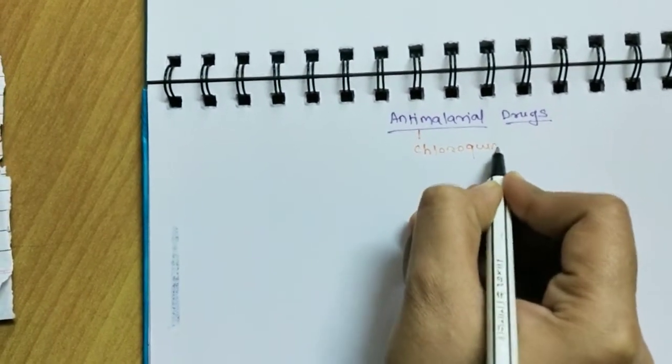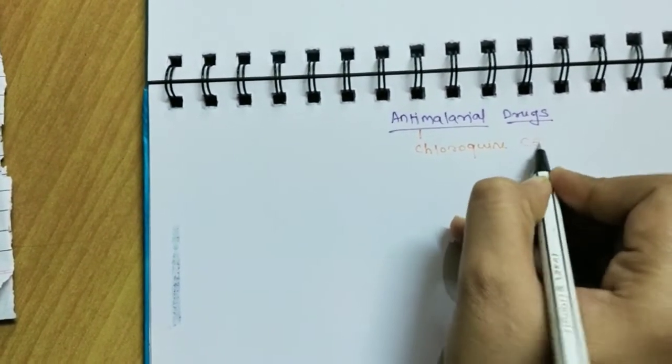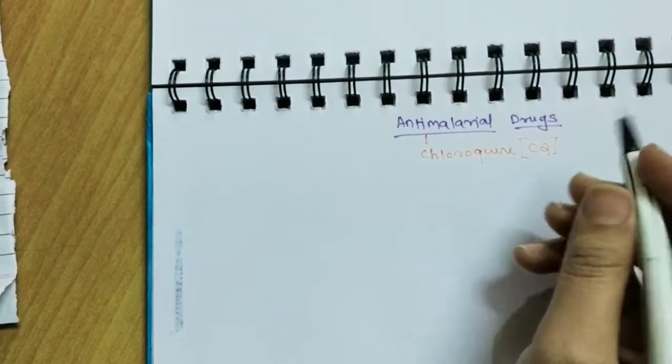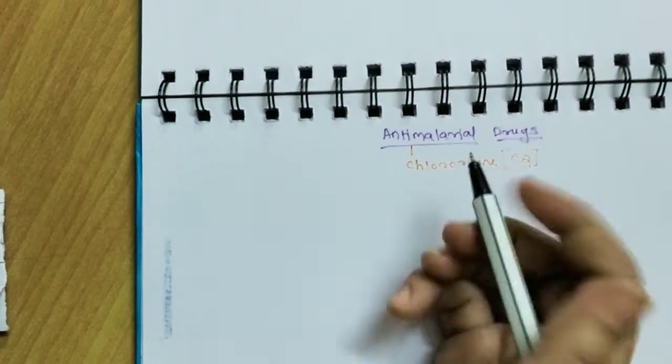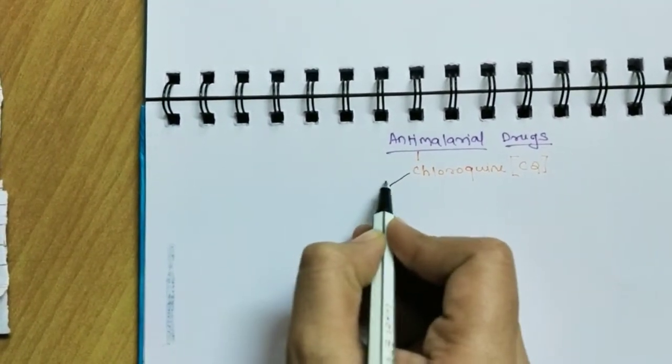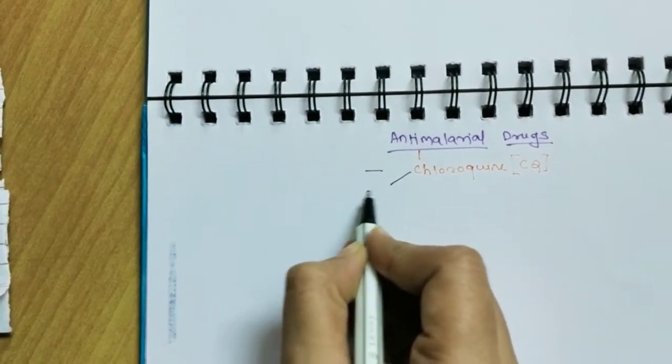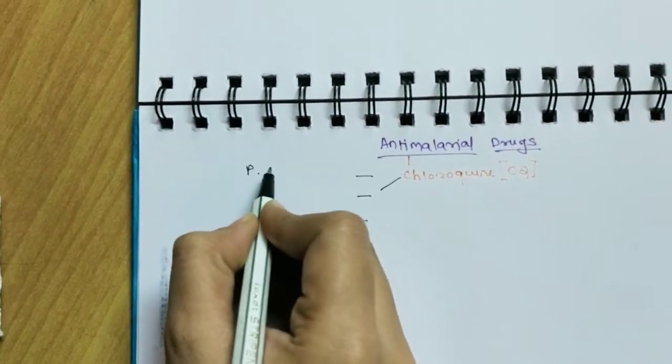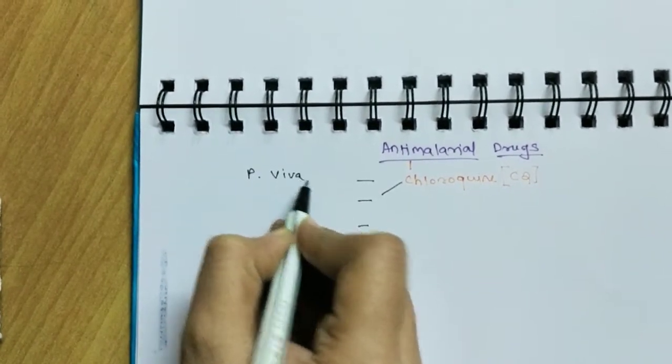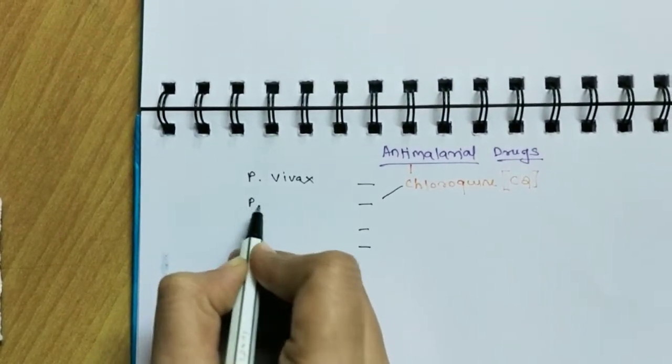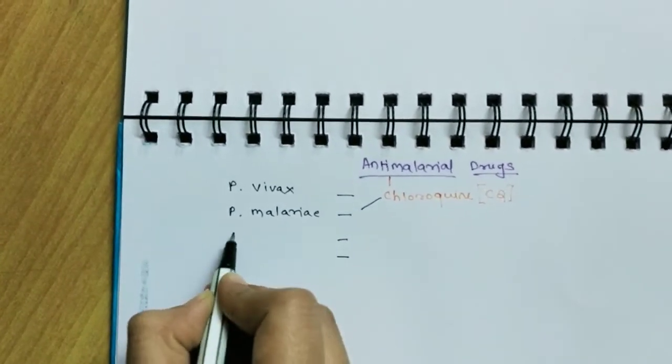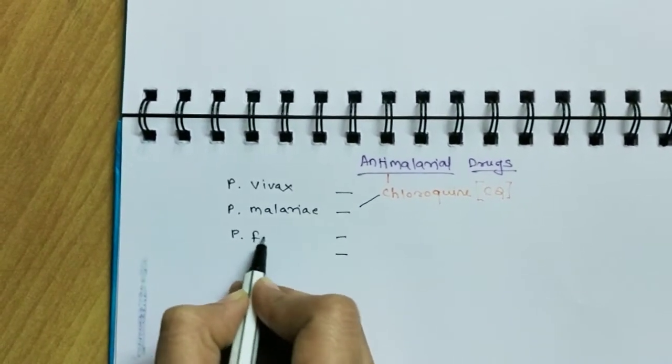Actually it is effective in all the four types of plasmodia. Let's also go to look at those. All the four types of plasmodia are: Plasmodium vivax, Plasmodium malariae, Plasmodium falciparum, and Plasmodium ovale.